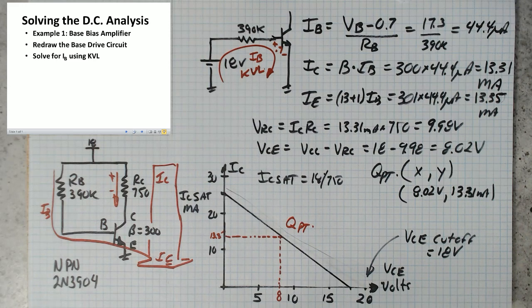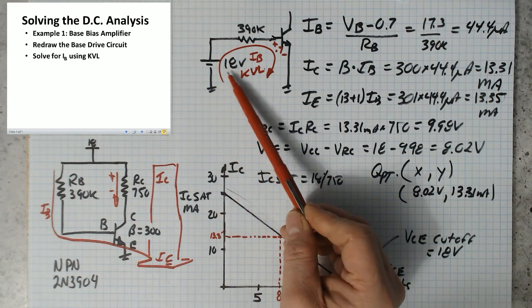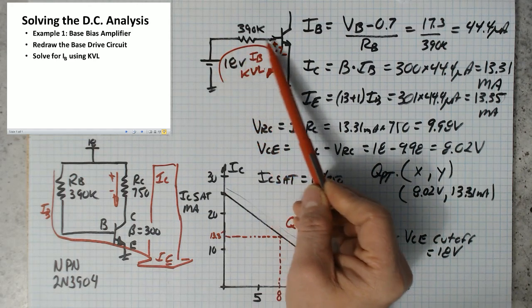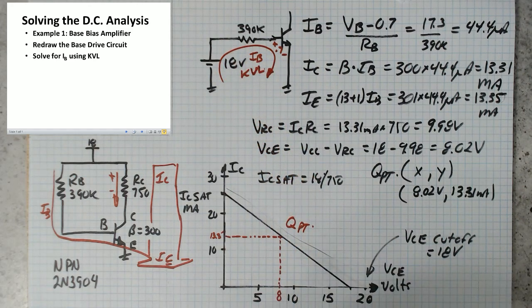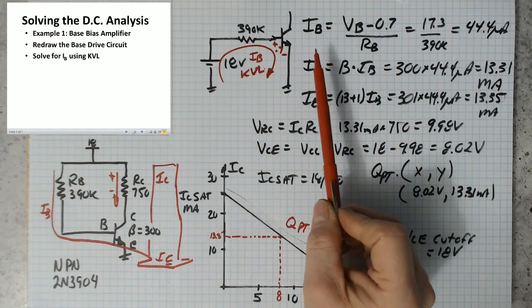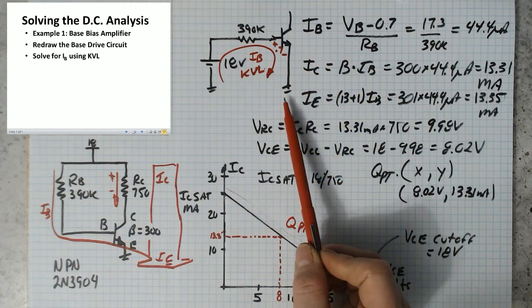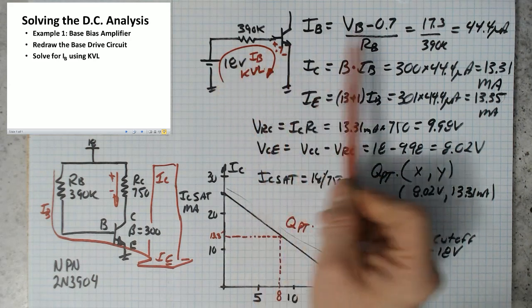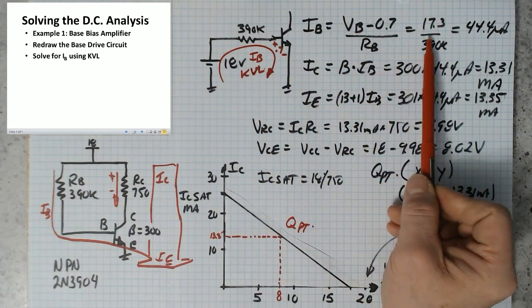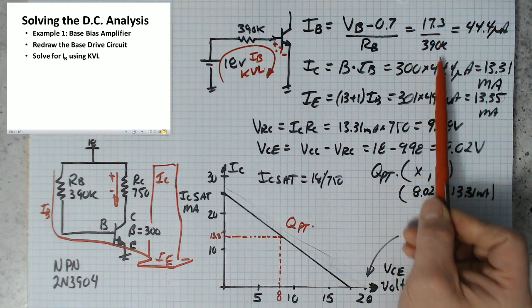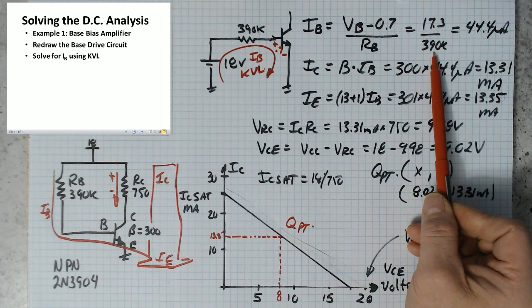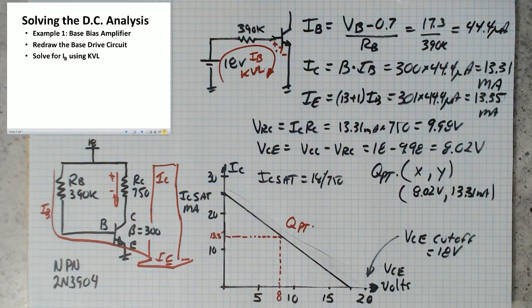Then what we do is we solve for base current using KVL. So we rewrite this equation. We've got 18 volts here. We write a KVL equation. We do a bit of algebra. And we come up with that IB is equal to VB minus 0.7 over RB. VB is the base voltage, so that's 18 minus 0.7, that's 17.3 volts over 390k, which is 44.3 microamps.